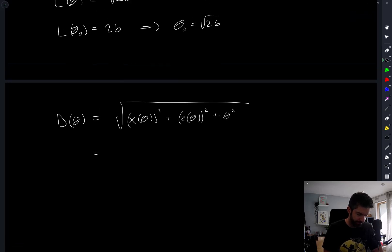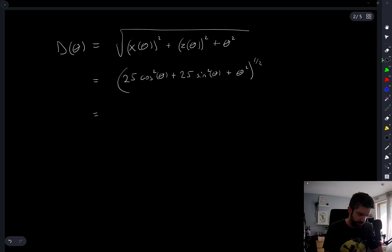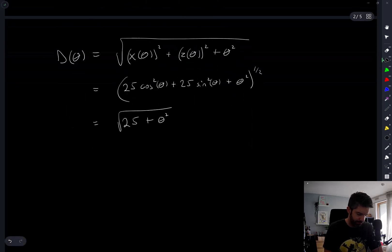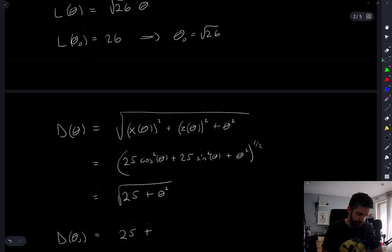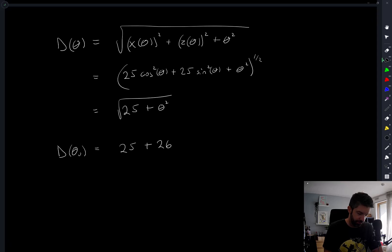Which is 25 cos squared theta plus 25 cos squared theta plus theta squared under root. And so then D of theta naught is 25 plus theta naught is root 26, so 25 plus 26 under square root, which is 51. And that's option B.